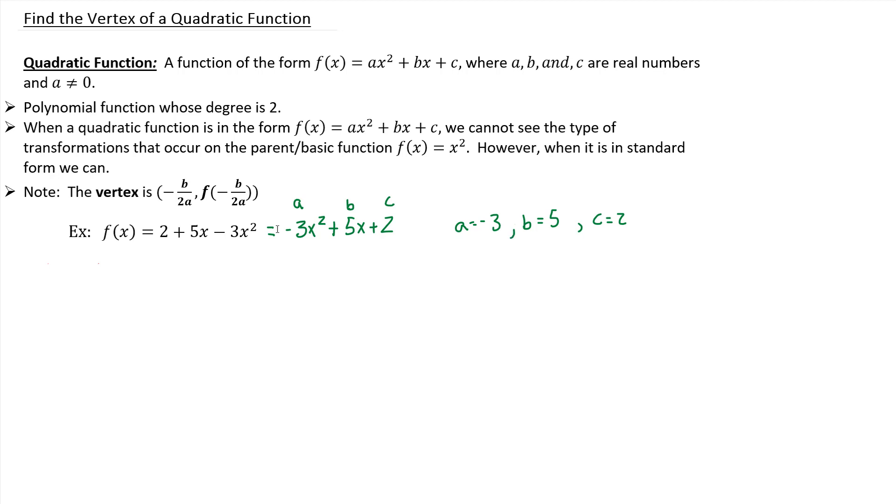Now if you want to determine your vertex, your vertex is just an ordered pair, some x comma y. And the x value is basically the opposite of b over 2a.